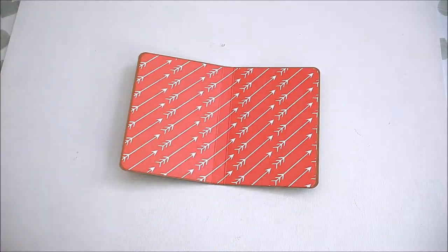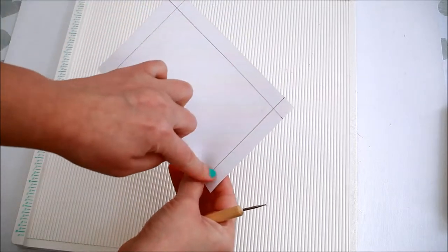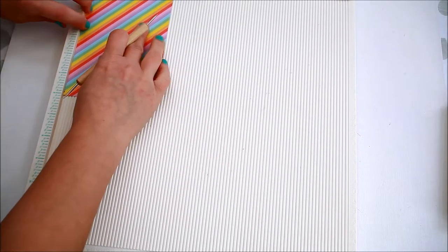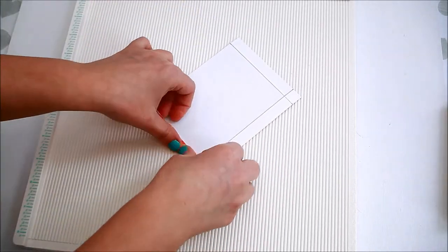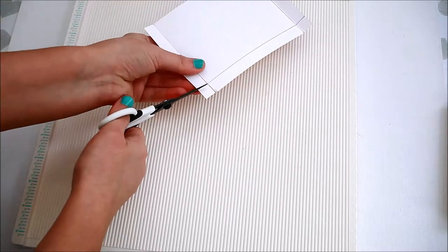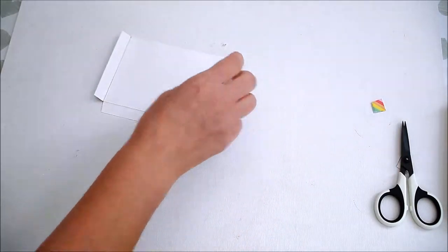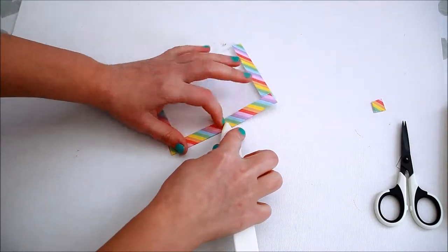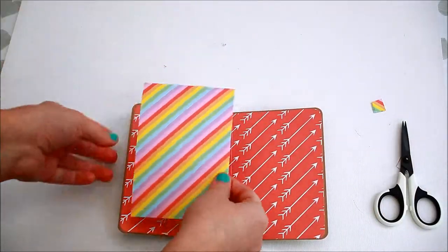Inside, we are going to create a little pocket. Trim your paper to four by six inches and score at half an inch on three sides only. Cut away the corners, fold and burnish the pocket, and affix it to the post-it holder.